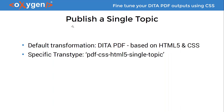Let's move to publishing a single topic. Some users want to publish one single topic out of an entire document. For this they use the transformation called DITA PDF based on HTML5 and CSS — the same transformation — but applied on a single topic rather than the whole DITA map. It can also be used as a standalone format called pdf-css-html5 for single topic.